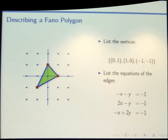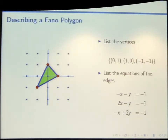The normalization condition we've taken here is that some number times x plus some number times y equals negative 1. The nice reason to normalize with negative 1 is that if you convert all of these equalities for the edge equations to an inequality with a greater than or equal to sign, the interior points of this triangle are precisely the ones that satisfy the system of inequalities.